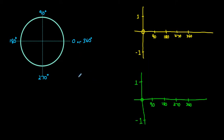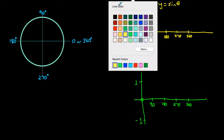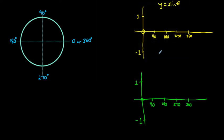We'll look at how we can relate the three primary trig ratios to this unit circle, and then use that relationship to help graph what sine theta and cosine theta actually look like graphically. We'll graph sine theta in yellow and cosine theta in green.